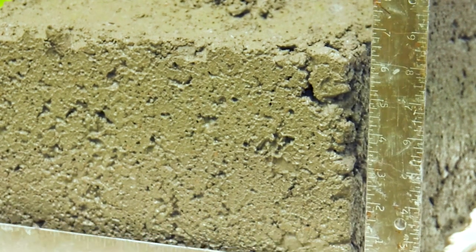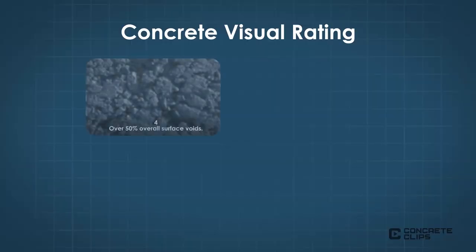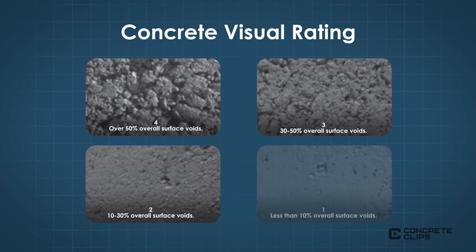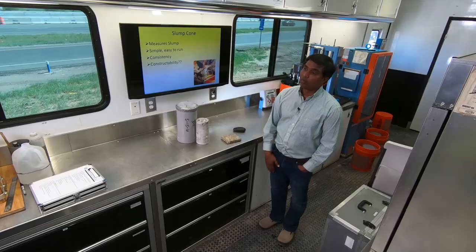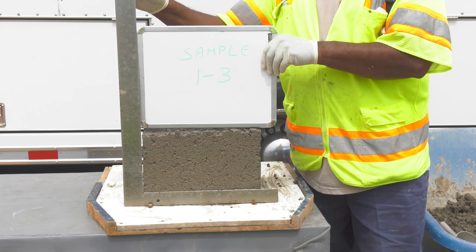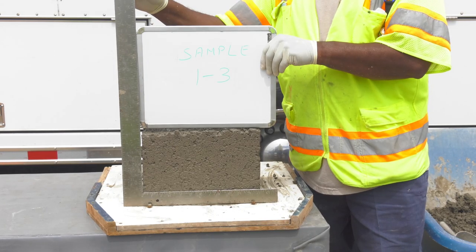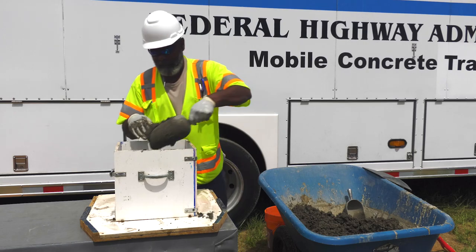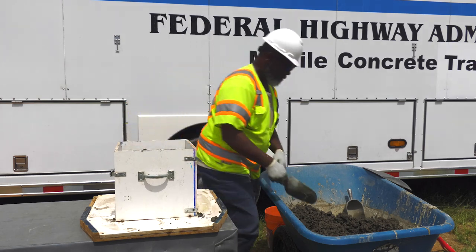The sides of the box are then removed and inspected for honeycombing or edge slumping. A visual rating of surface voids and edge slumping ranks from one to four, with one being the best and three or four being considered undesirable. We want concrete that is workable enough to be consolidated and placed well, while still stiff enough to hold an edge and avoid quality issues.